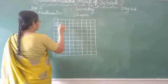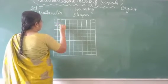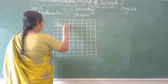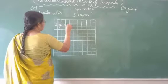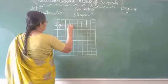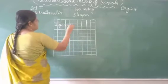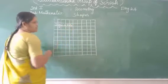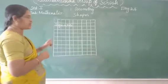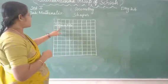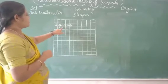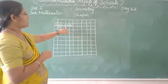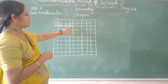Yes. Q, U, A, R, E — square. Okay. Yes. Q, U, A, R, E — square.